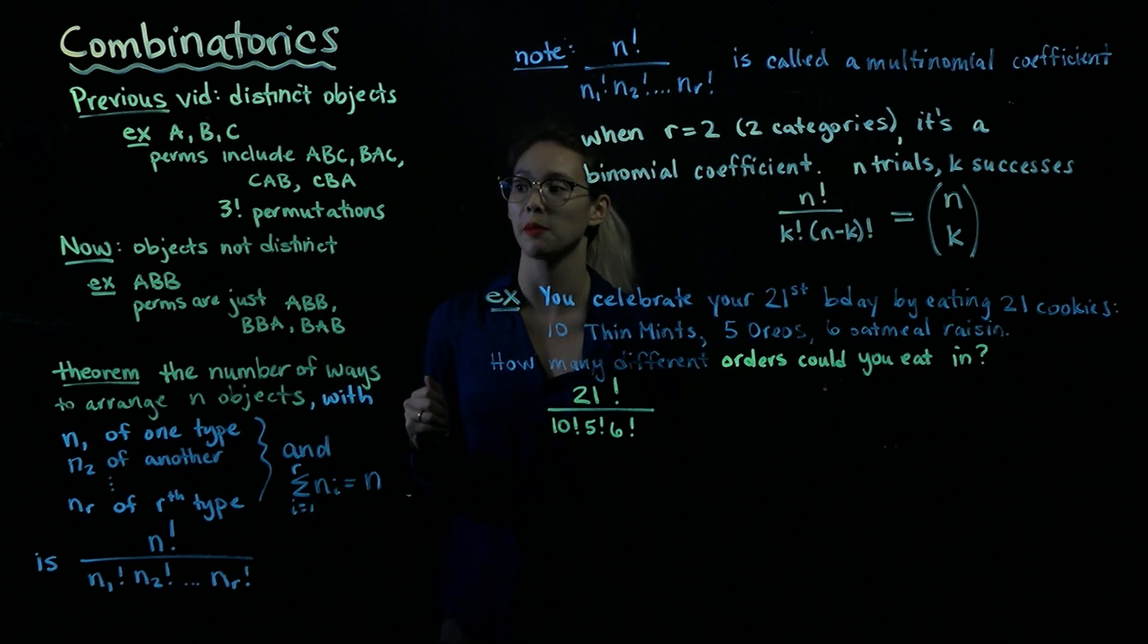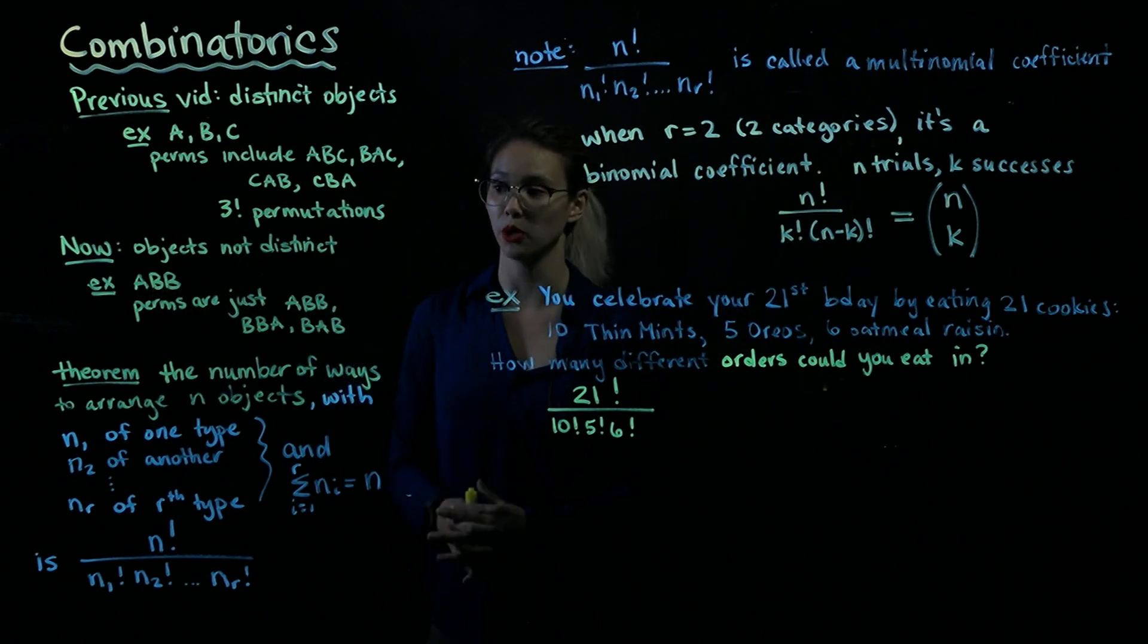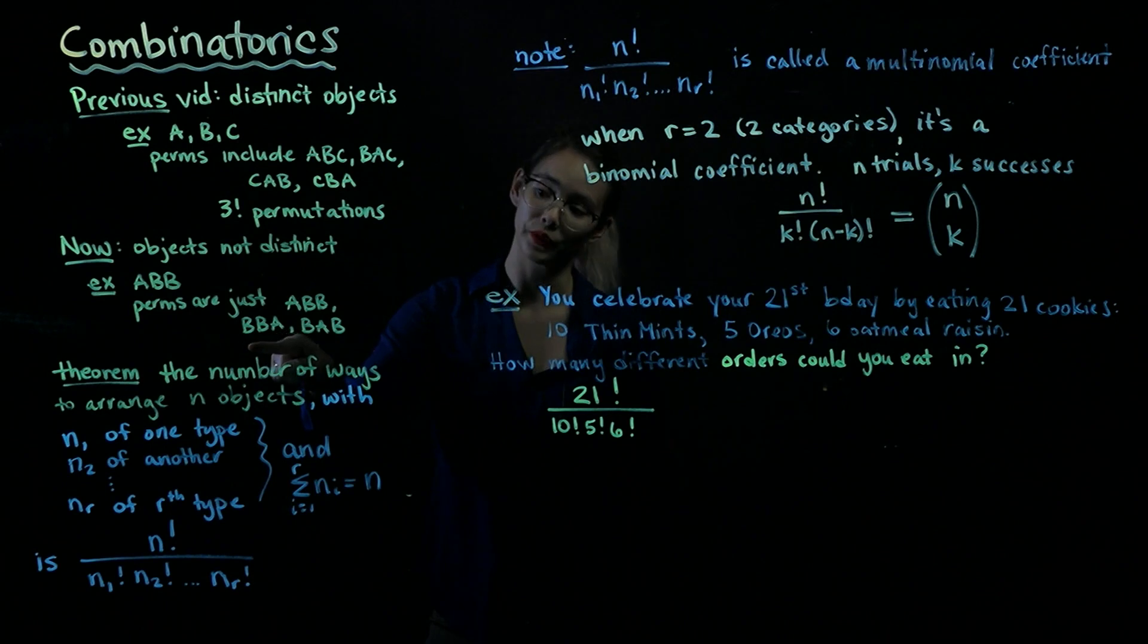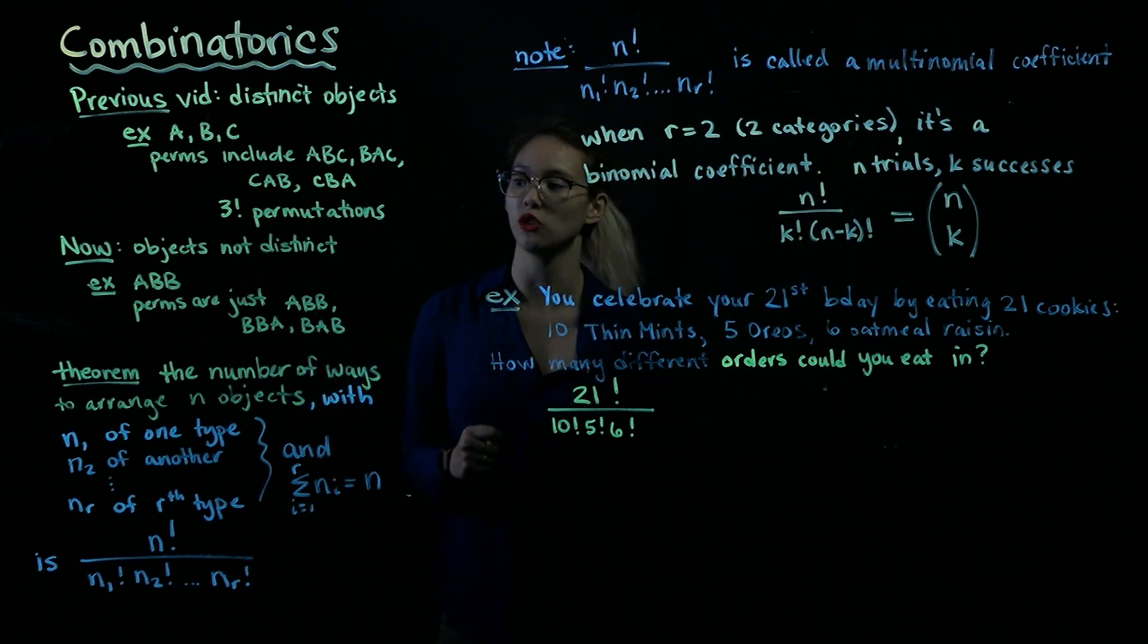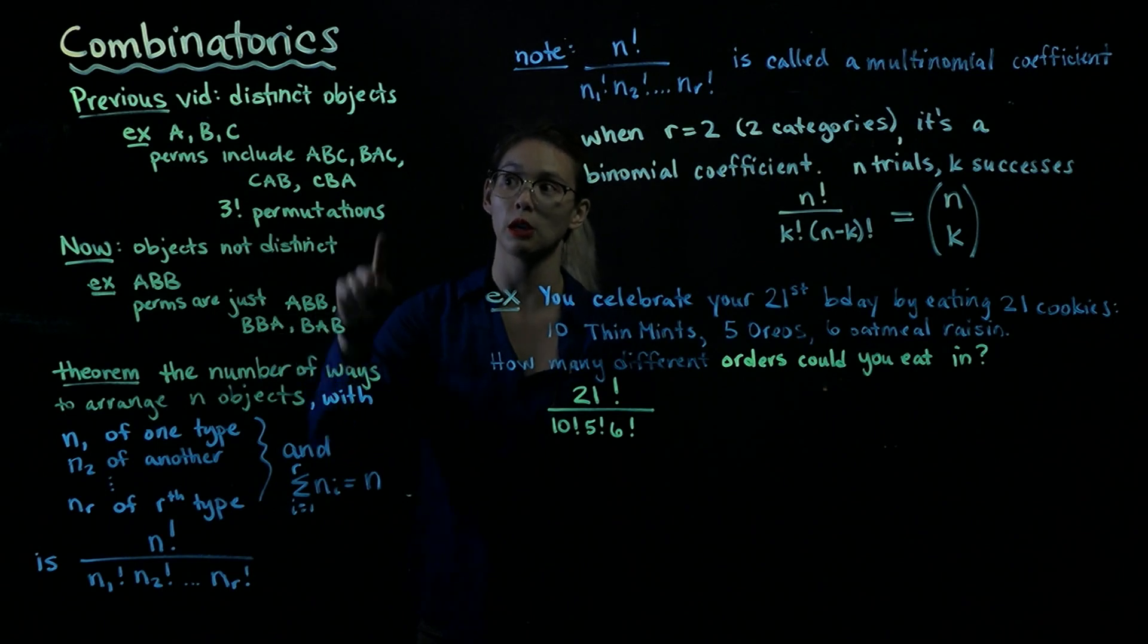So now we're going to talk about objects that are not distinct. Now imagine we have one A and two Bs, and we want to permute these. What would these permutations look like? Well, we could have A first and then the two Bs, we could have the two Bs first and then the A, or we could have the A sandwiched in between the two Bs. So we can see when we have objects that are not distinct from each other, then we have fewer permutations than when we have objects that are distinguishable from each other.